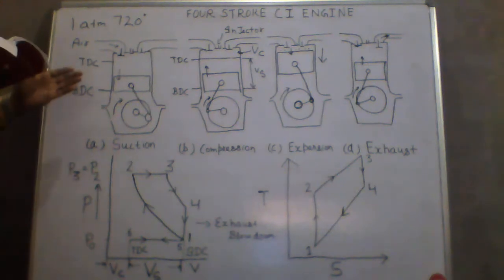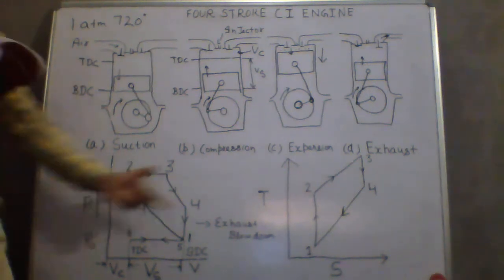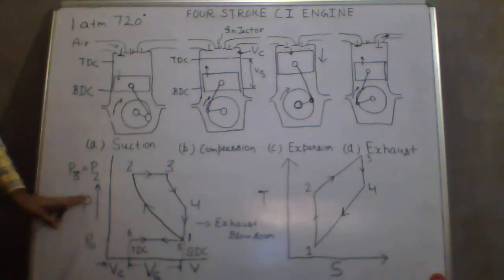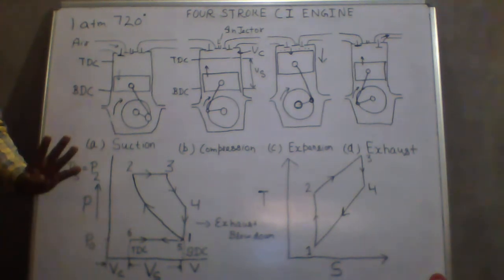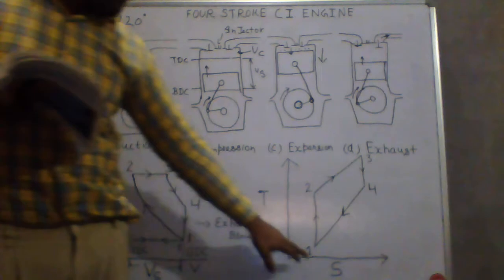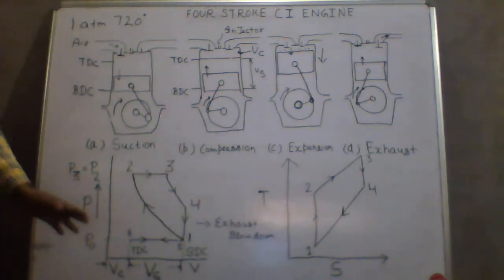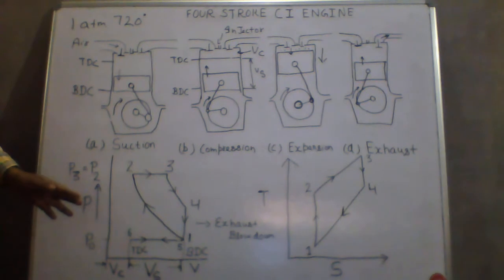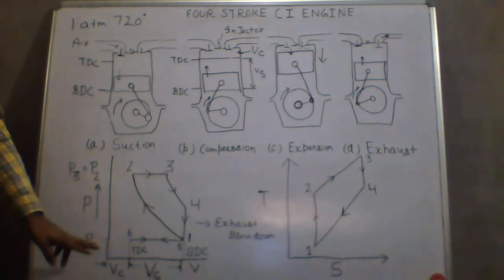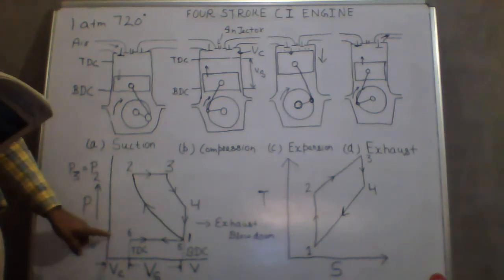This compression ignition engine is explained on PV and TS diagrams. We will discuss the pressure-volume and temperature-entropy diagrams. There are four parameters: pressure, volume, temperature, and entropy. We need to discuss these four parameters for calculation purposes and to get the work output of the engine, which we will discuss in coming lectures.